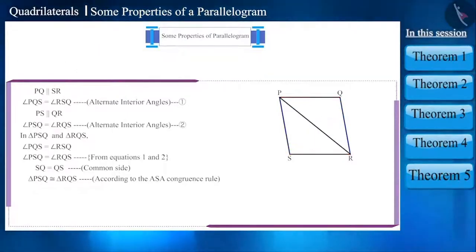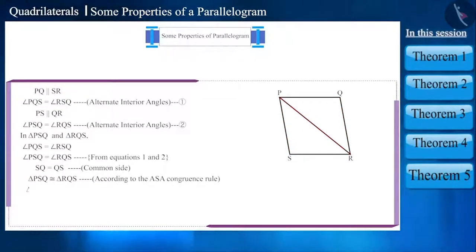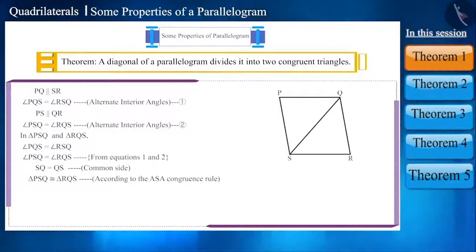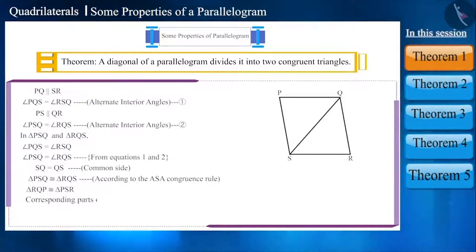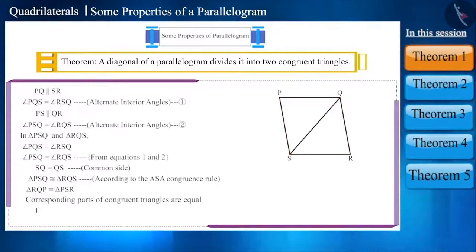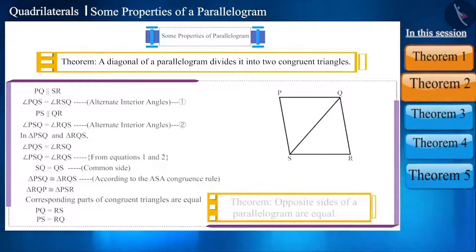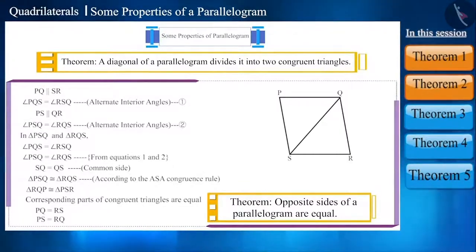You can make diagonal PR in the same way and check the congruence of the triangles. You will come to the conclusion that diagonal PR also divides quadrilateral PQRS into two congruent triangles. This is the property of a parallelogram and we can write it as the theorem: a diagonal of a parallelogram divides it into two congruent triangles. And as we know that corresponding parts of congruent triangles are equal, the corresponding sides of these triangles will also be equal — that is, side PQ is equal to side RS and side PS is equal to side RQ. Note that these sides are opposite sides of this parallelogram. This is another property of a parallelogram: the opposite sides of a parallelogram are equal.